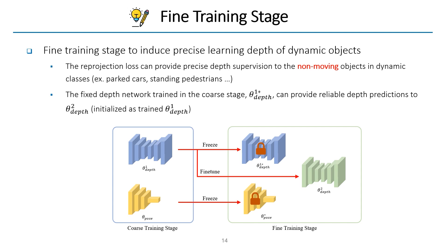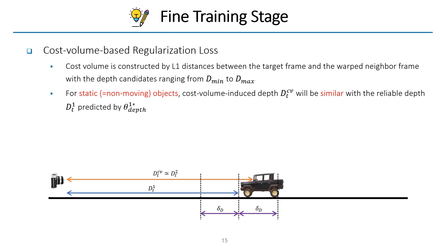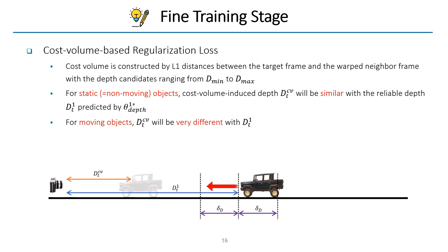However, the reprojection loss guides to predict inaccurate depth on moving object regions. To mitigate this issue, we propose a cost-volume-based regularization loss. A cost-volume is constructed by the L1 distances between the target frame and the warped neighbor frames with the depth candidates. From the cost-volume we can get the depth that has minimum L1 distances, called cost-volume-induced depth. For static objects, the cost-volume-induced depth will be similar to the depth aligned with the ground contacting points. For moving objects, the cost-volume-induced depth will be very different from the reliable depth. We use the difference between the reliable depth and the cost-volume-induced depth to regularize inaccurate learning on the moving object regions.